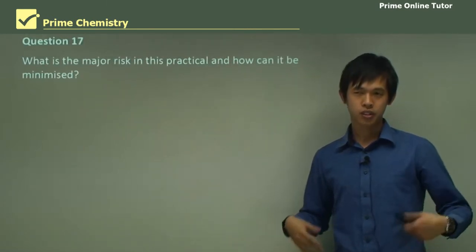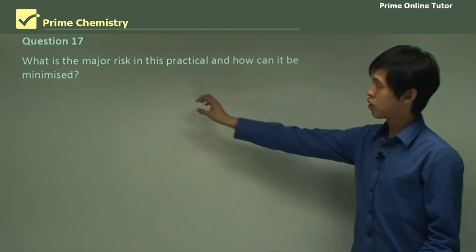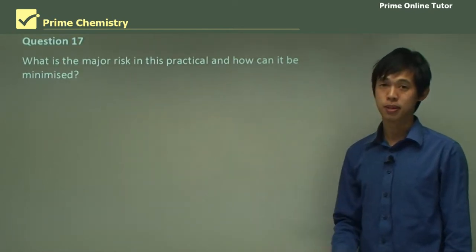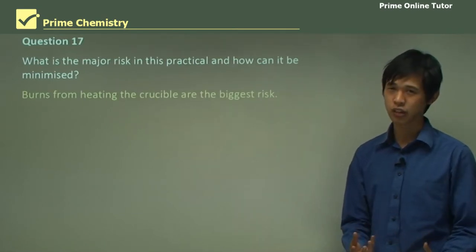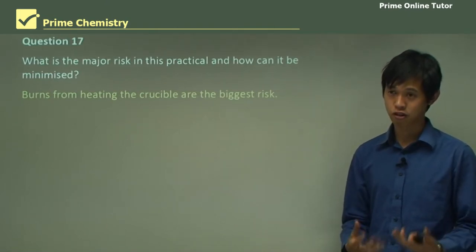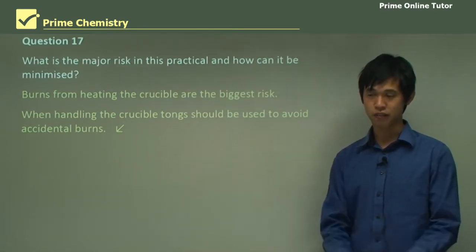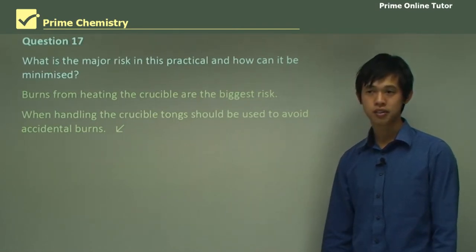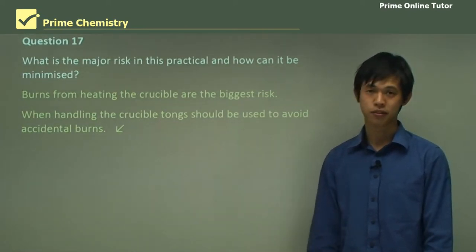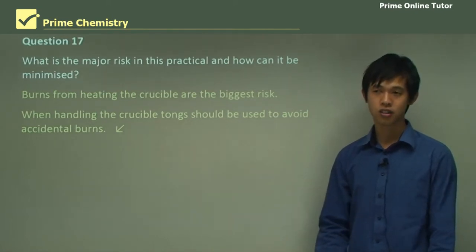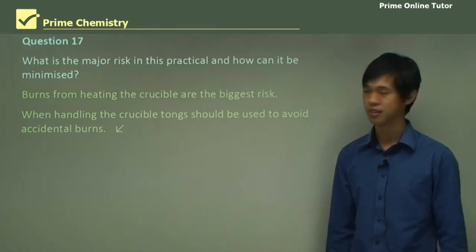So when we look at pracs, we always have to look at certain aspects of it. We don't really look at the chemistry so much all the time. So what is the major risk in this practical, and how can it be minimized? Burns from heating the crucible is the major risk. When you heat the crucible, it's getting really hot, so that's a very strong hazard. So when handling the crucible, tongs should be used, just to keep your hands away from the heat, to avoid accidental burns, and also letting the thing cool properly, not just being impatient and grabbing it. So that's how we minimize the risk, tongs, and just ensure that we let things cool normally. We don't try to rush anything, because that's how accidents happen.